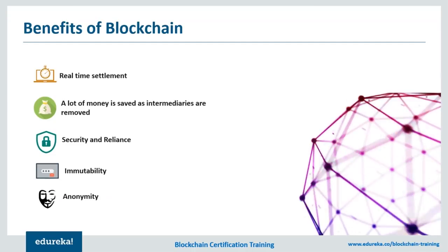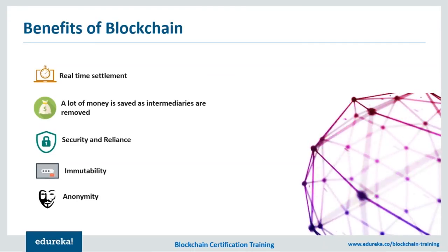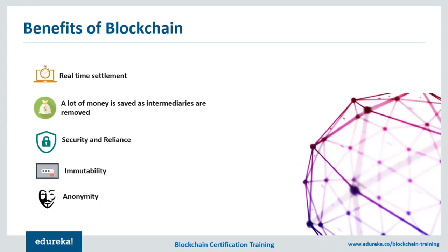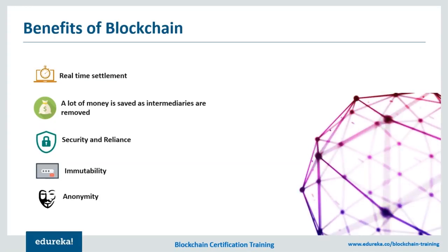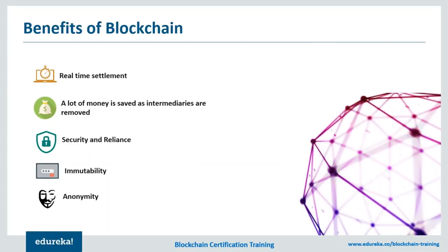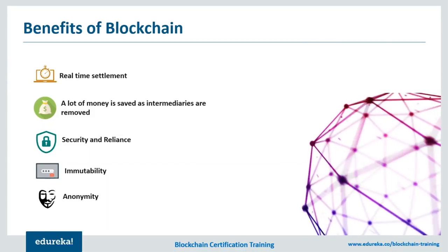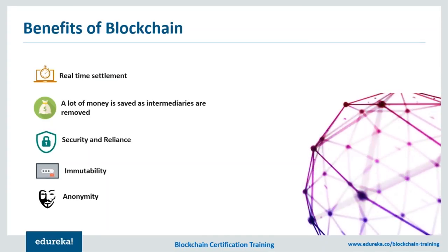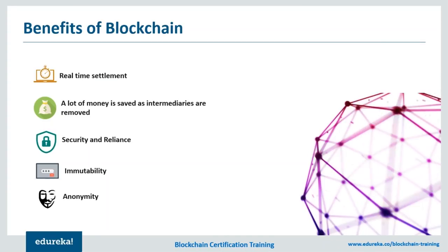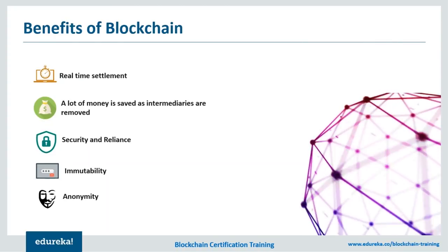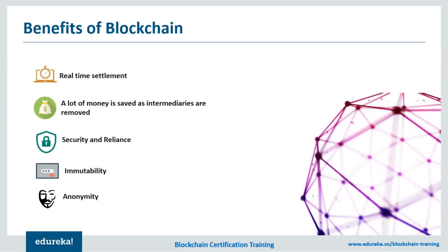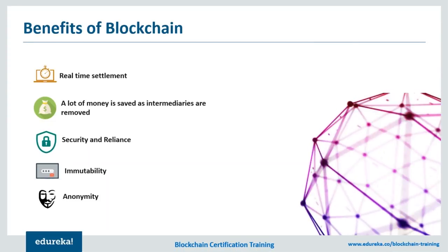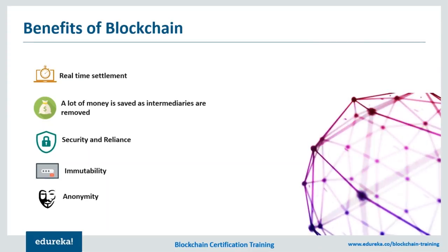Let's go over the potential benefits of blockchain. First, blockchain lets us settle deals in real time. Second, a lot of money is saved as intermediaries are cut down and transaction fees are avoided. Transactions are completely secure as your information is owned by no central authority like a bank. Through its process of validation and increasing currency, blockchain also provides resiliency, which is extremely important for any network to work in the market. Blockchain transactions are immutable and can serve as a single source of truth for a list of transactions. Also, transactions can be committed completely anonymously, which is a big boon.